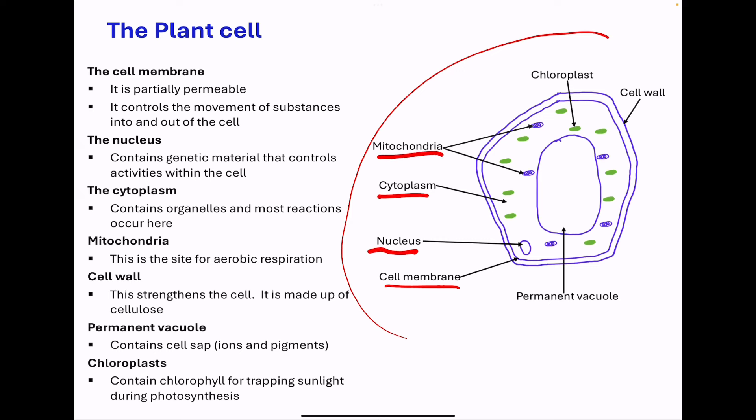The mitochondria are organelles where aerobic respiration takes place. Then we go to the cell wall. This is made up of cellulose, and its purpose is to strengthen the cell. We have the chloroplast, where photosynthesis takes place.